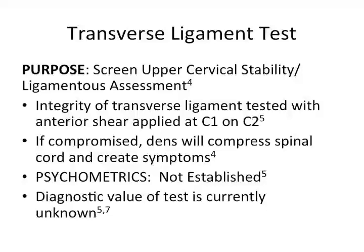The purpose of the transverse ligament test is to screen for upper cervical stability and provide a ligamentous assessment. The integrity of the transverse ligament is tested with an anterior shear applied at C1 on C2. If compromised, the dens will compress the spinal cord and create symptoms.